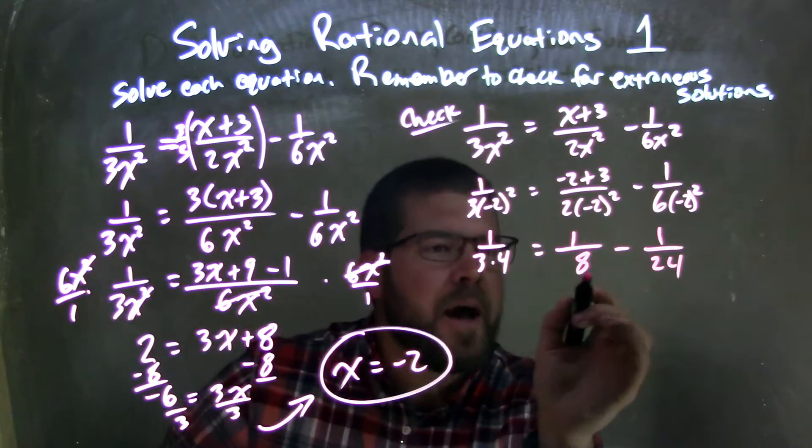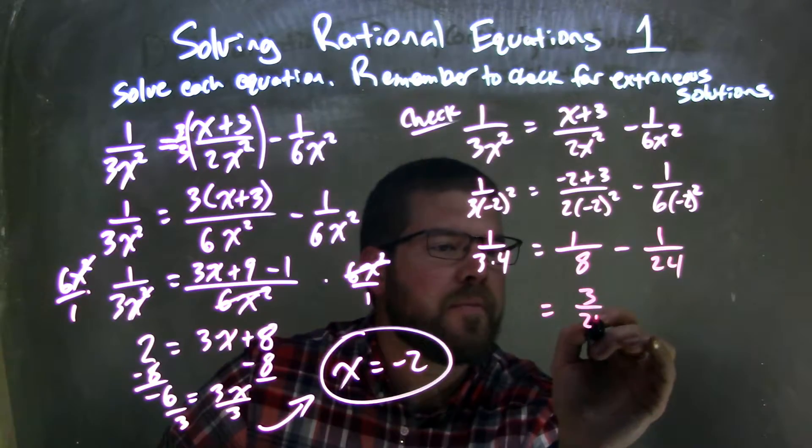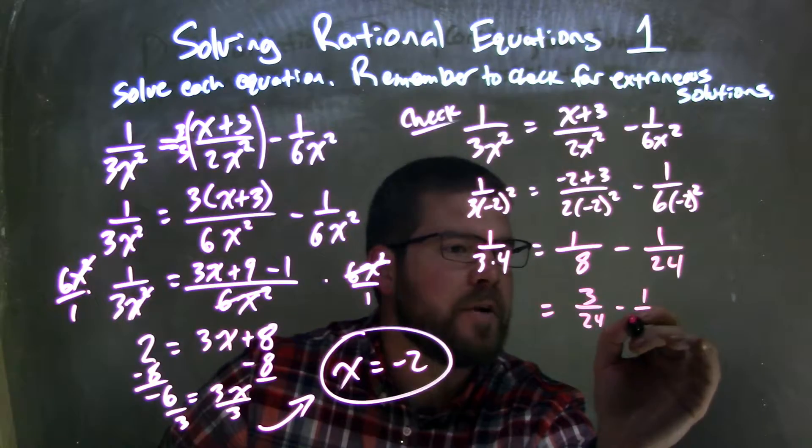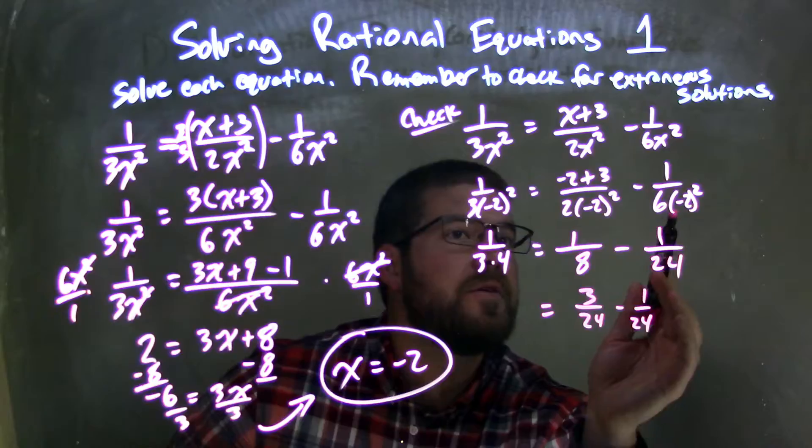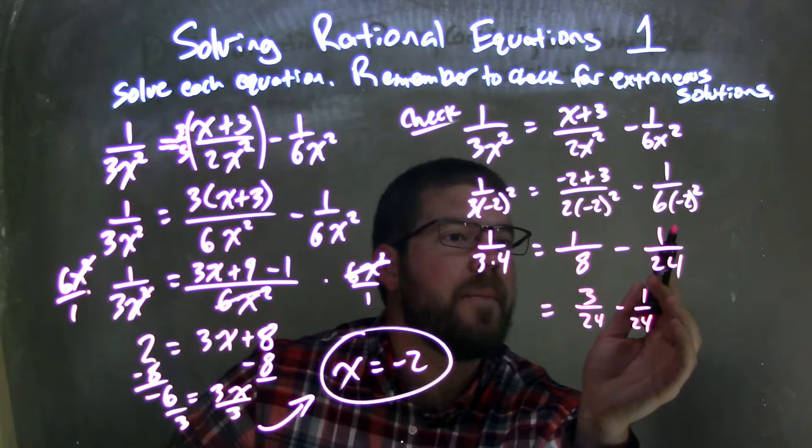Now we need to combine these two fractions. 1 over 8, I can rewrite that to be 3 over 24, multiply both by 3 over 3, so we can subtract the two fractions: 1 over 24 here.